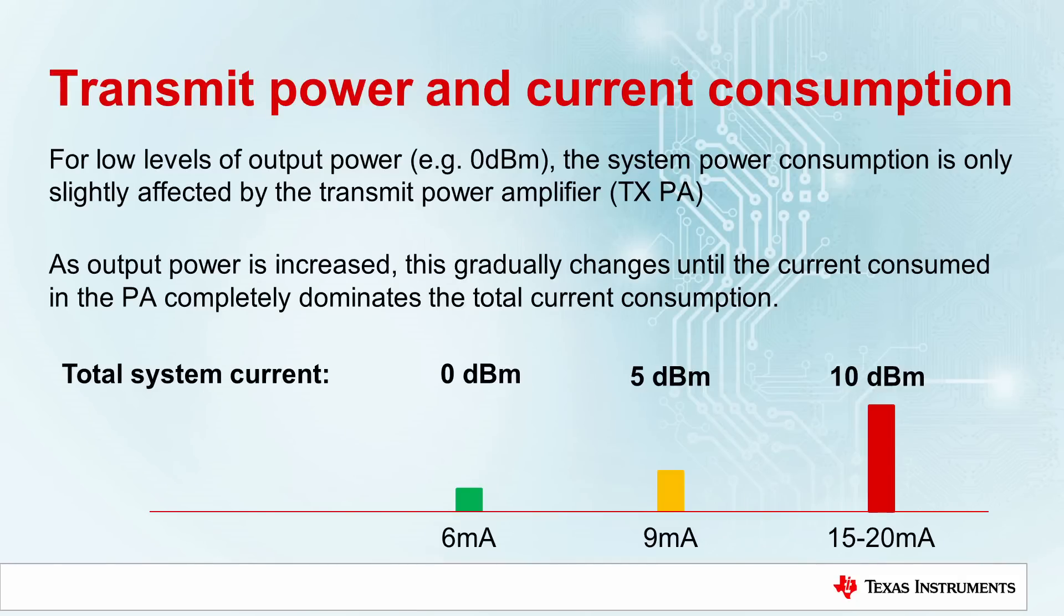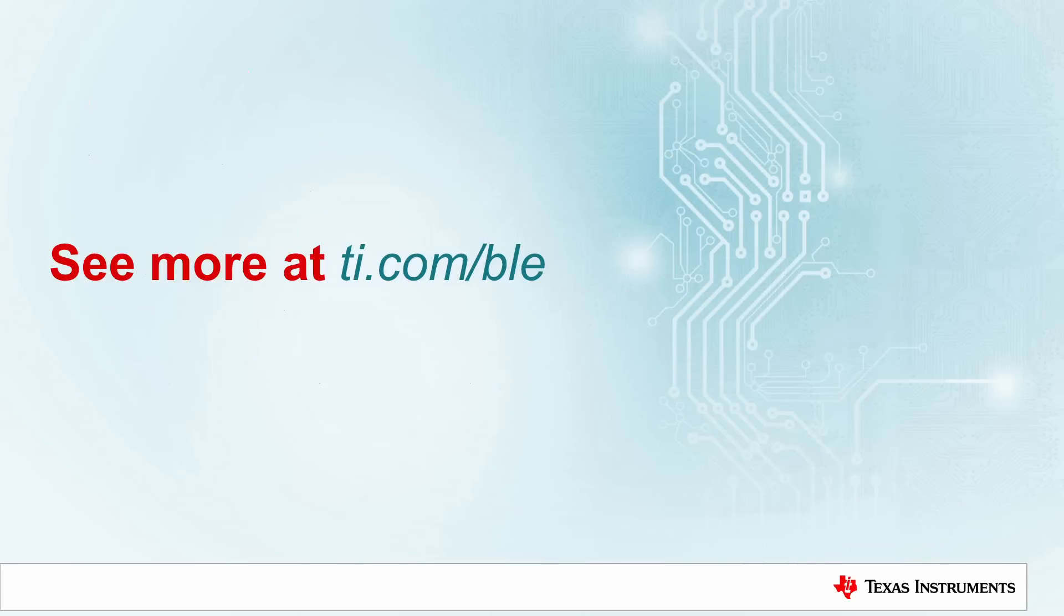To conclude, we have shown you that by using the new Bluetooth 5 coded PHY, we can achieve a BLE range of more than 1.5 kilometers, while still maintaining a peak current consumption below 10 milliamps. Thank you for watching. Please visit our Bluetooth Low Energy web page for more information on how to get started with the CC2640R2F.